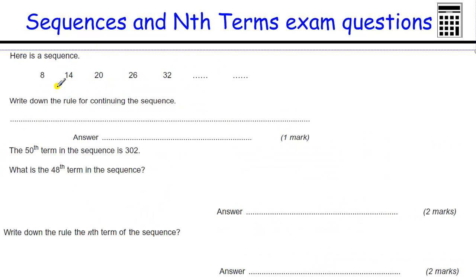Here's a sequence. Again, always look to see what's happening here. So we're adding six. Adding six is staying the same. Each time we add six. Write down the rule for continuing sequence. So to continue it, I add six each time.